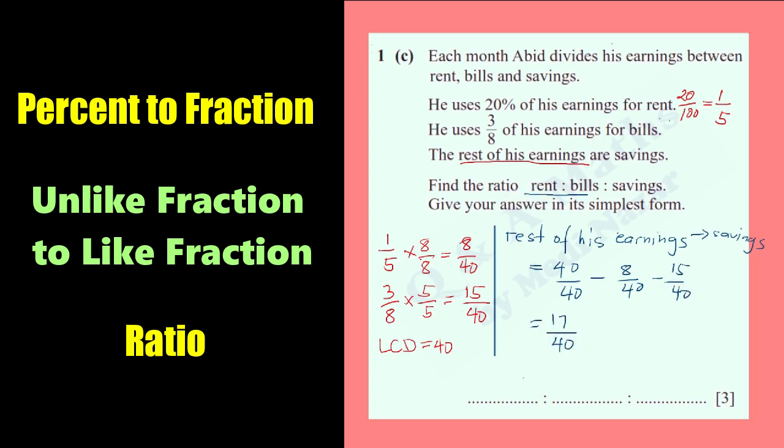The ratio of rent, bills, and savings would be this 8, this 15, and this 17. So we have here 8, 15, and 17.